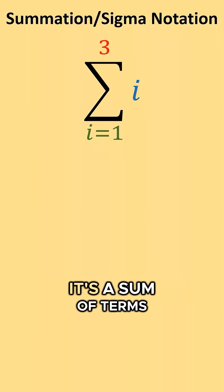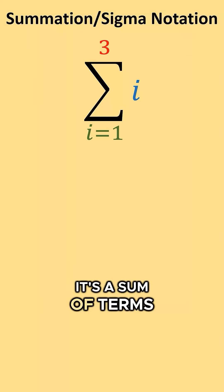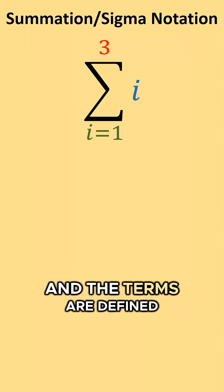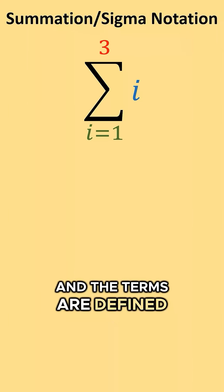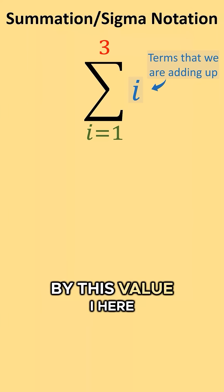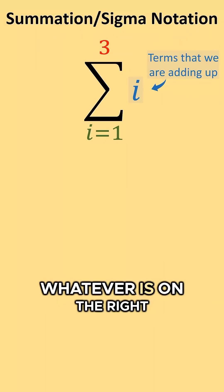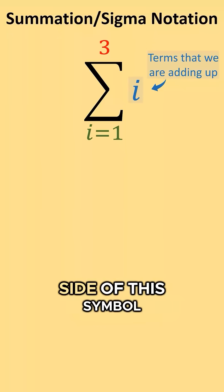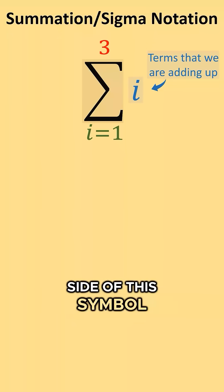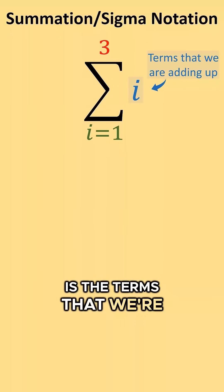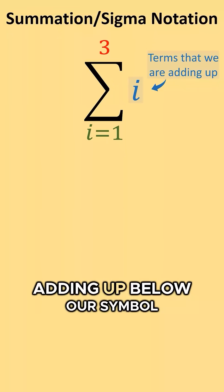So what is this? It's a sum of terms, and the terms are defined by this value i here. Whatever is on the right side of this symbol is the terms that we're adding up.